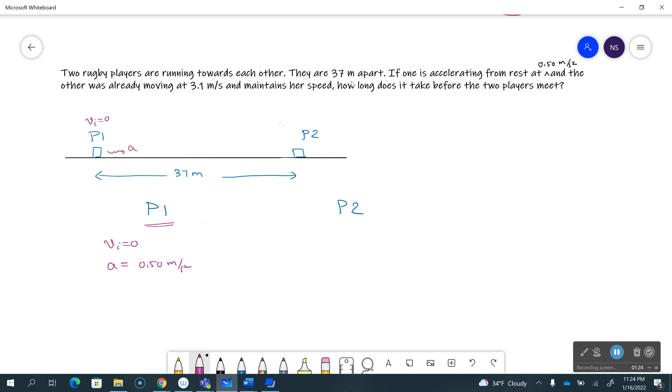And the other one is already moving at 3.1 meters per second. So player two has an initial velocity of minus 3.1 meters per second. Minus just says moving to the left from my picture, and it's constant velocity so vi or vf, it doesn't matter. They're all the same, that's negative 3.1 meters per second.